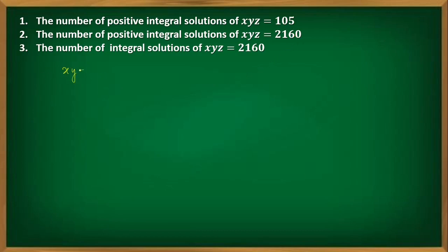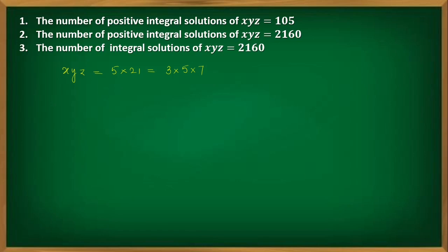Now, x·y·z = 105. If you write the canonical form of 105 as a product of primes: 105 = 5 × 21 = 5 × 7 × 3, so we write 3 × 5 × 7. Here we have x·y·z = 3 × 5 × 7 = 105.